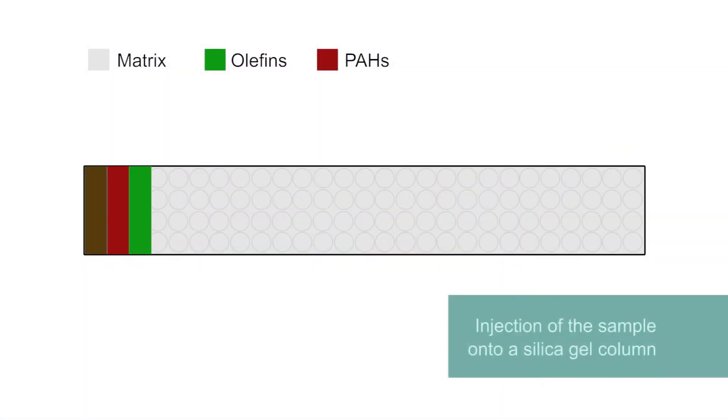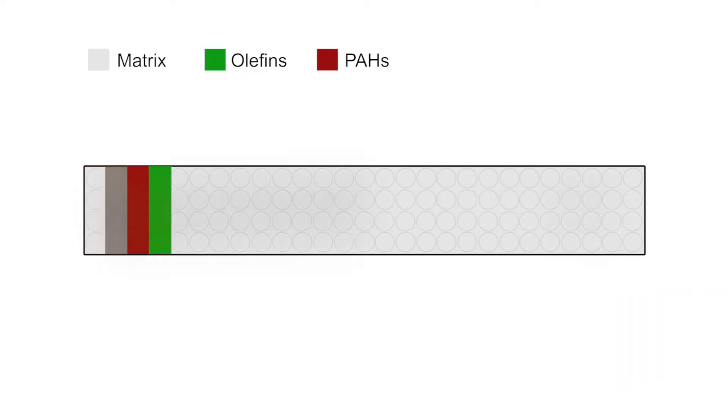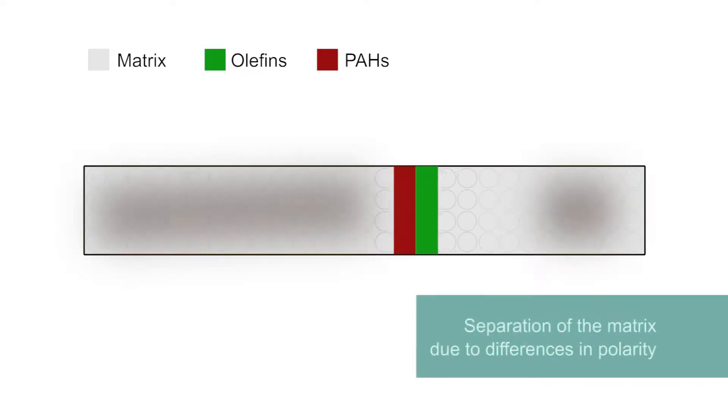The sample is injected onto a silica gel column. Depending on differences in polarity, the matrix is separated.